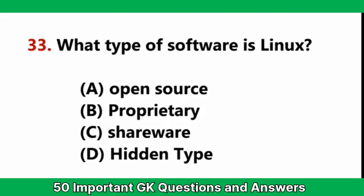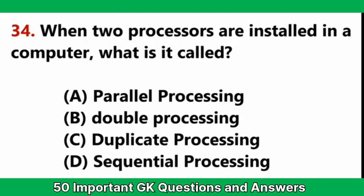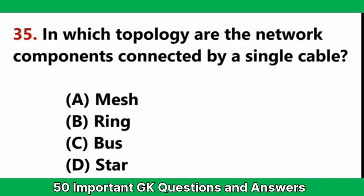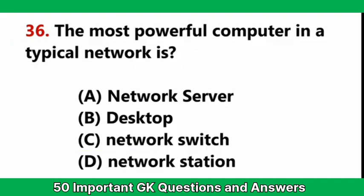What type of software is Linux? — Answer A: open source. When two processors are installed in a computer, what is it called? — Answer A: parallel processing. In which topology are the network components connected by a single cable? — Answer C: Bus. The most powerful computer in a typical network is — Answer A: network server.